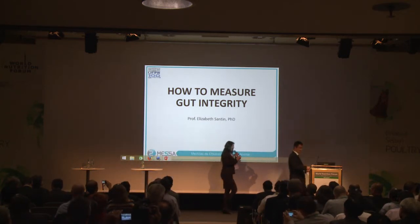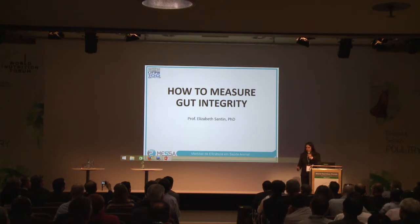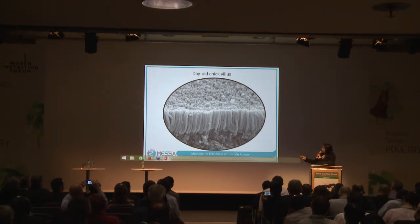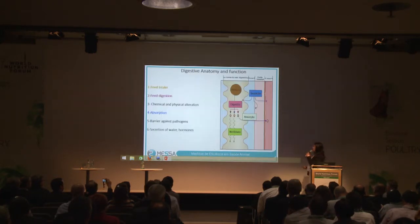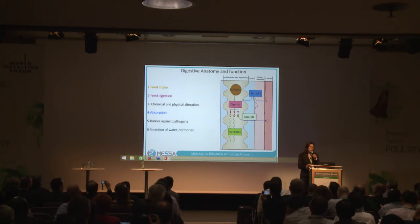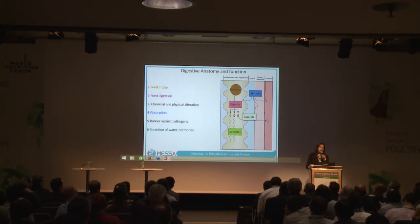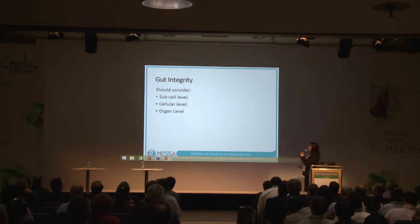Thank you for the introductions. Thank you for Biomine to invite me here today to talk a little bit about what we are doing in Brazil to ensure gut integrity. What we expect when we have a bird or a chicken is to have a healthy gut with good villi that can absorb and digest all the nutrients we put in the feed. The intestinal gut functions are important because if you have good development of the digestive tract, you have nutrients to supply other systems like the immune system, respiratory system, and reproductive system. This is why we talk so much about the digestive tract when talking about broilers and feed production.